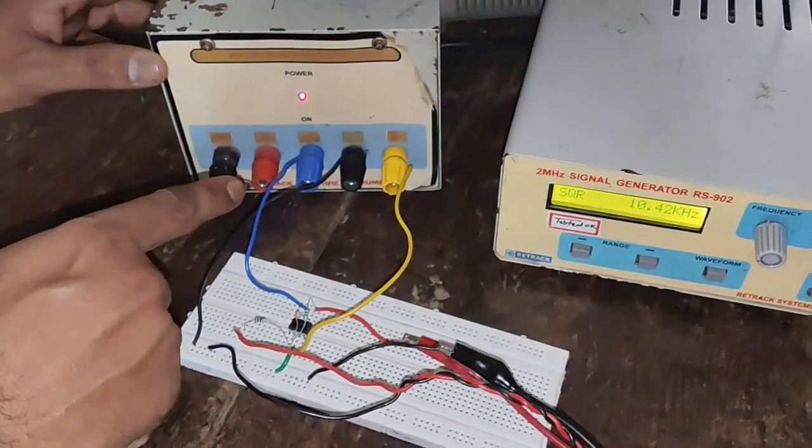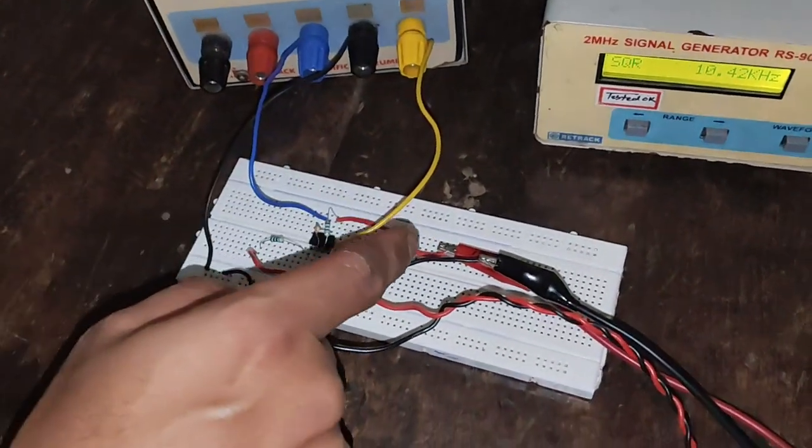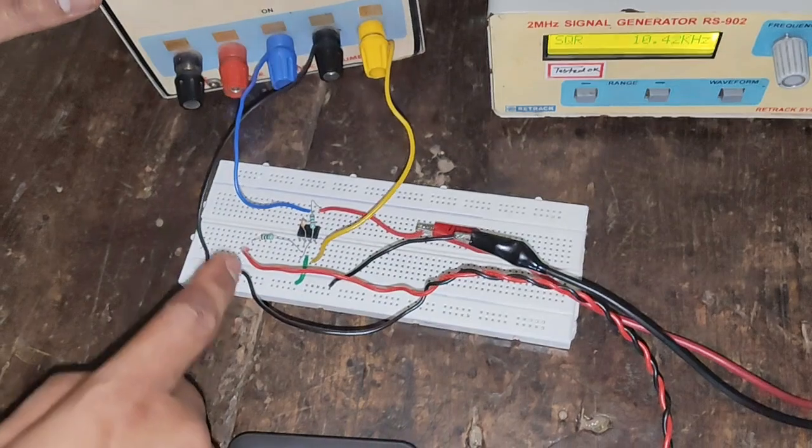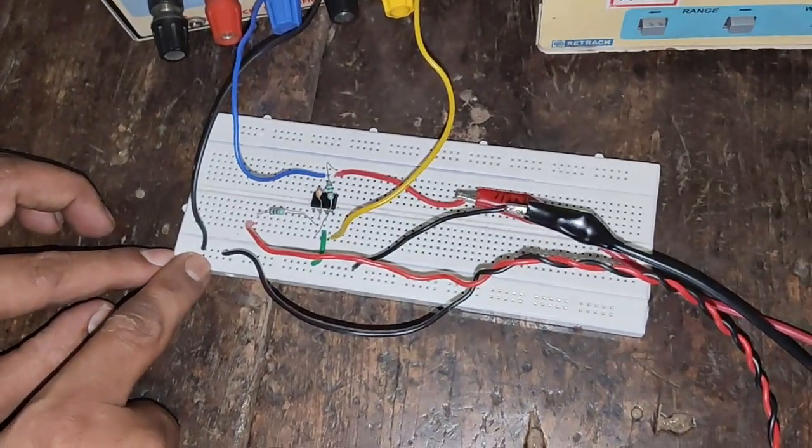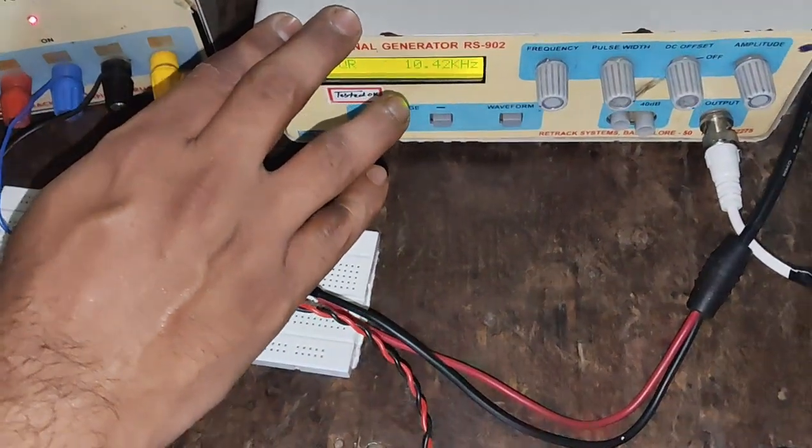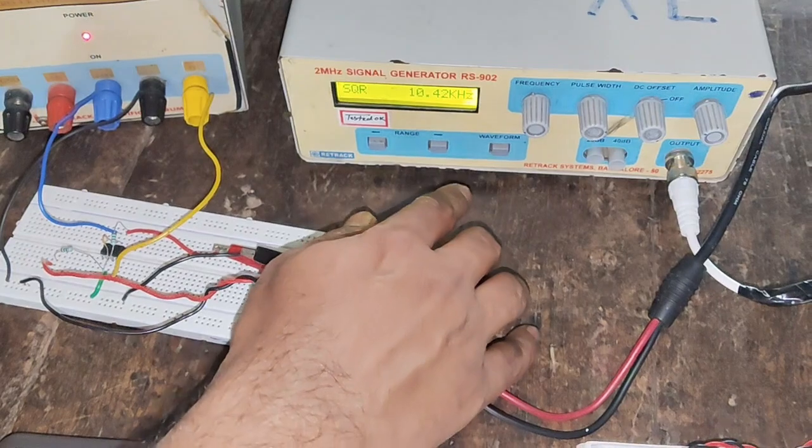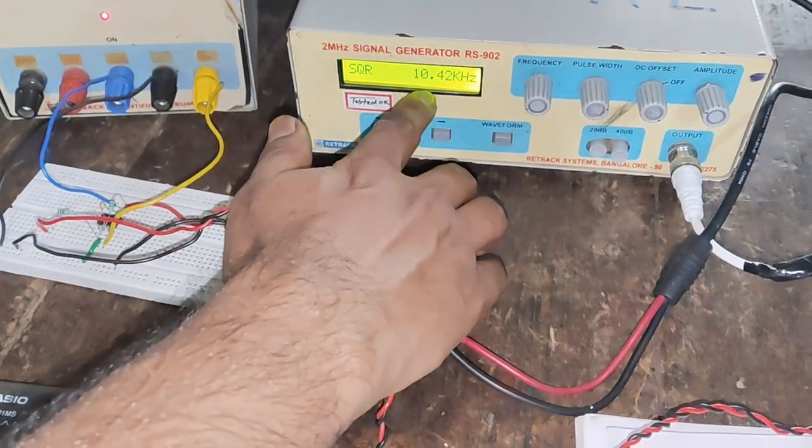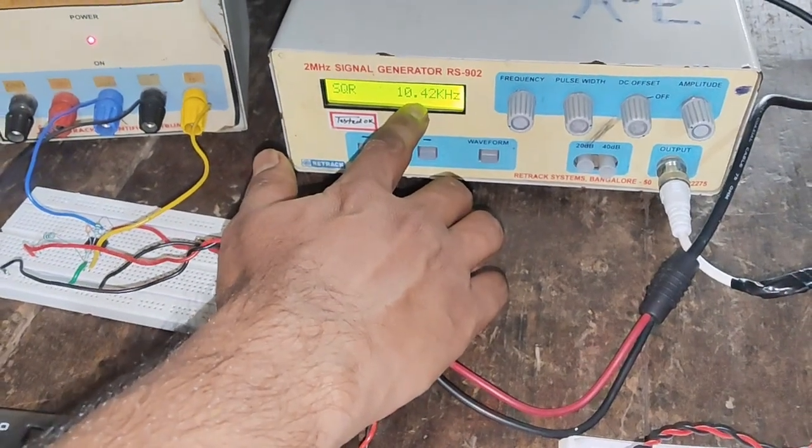Here we have given the 15V positive to pin number 7 and minus 15V to pin number 4 and the ground is connected to the ground of the circuit. At the input we are using function generator. In the function generator we have selected here the square wave waveform and we have set the frequency 10kHz and amplitude as 1V.